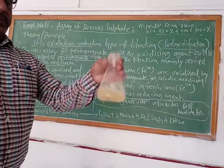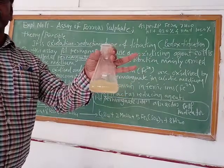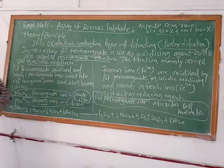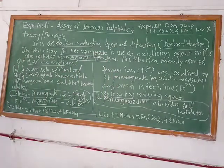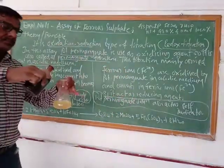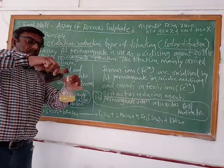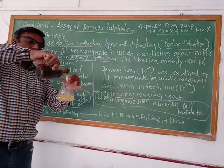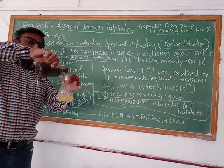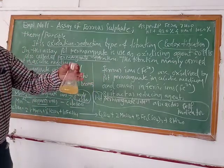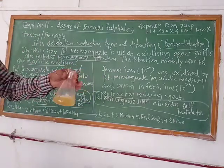In acidic medium, it becomes colorless. Simply, if you add potassium permanganate, it will become colorless, as we see here. It becomes colorless.